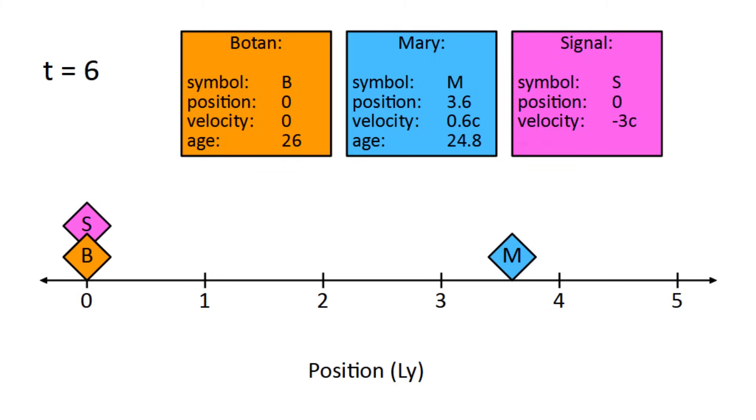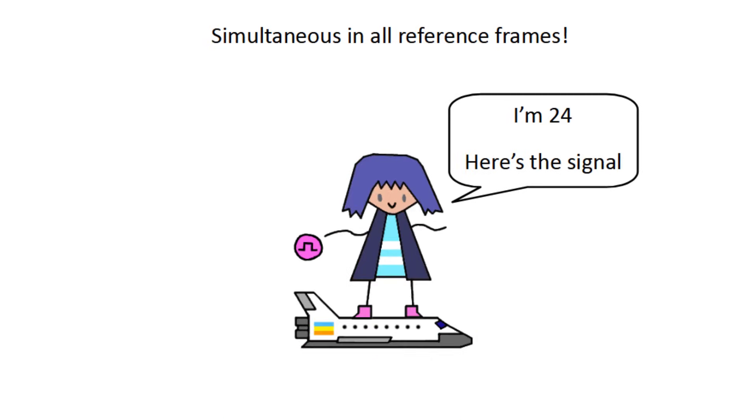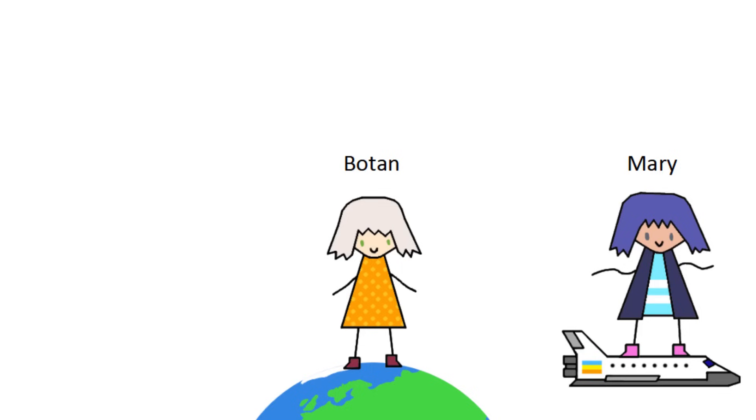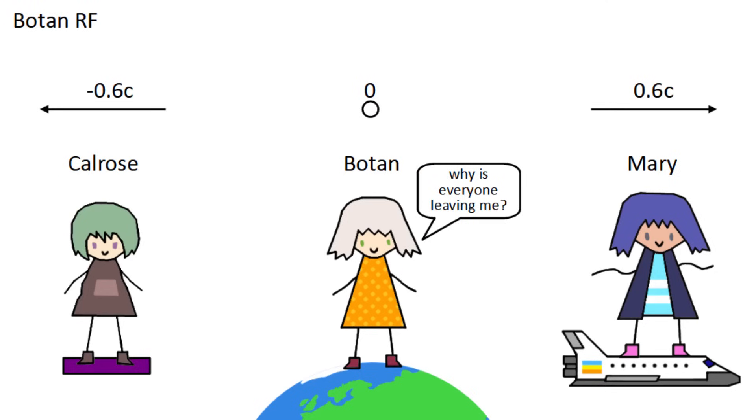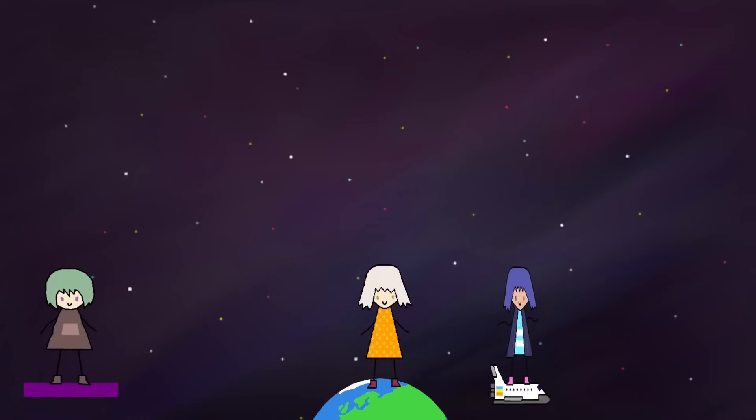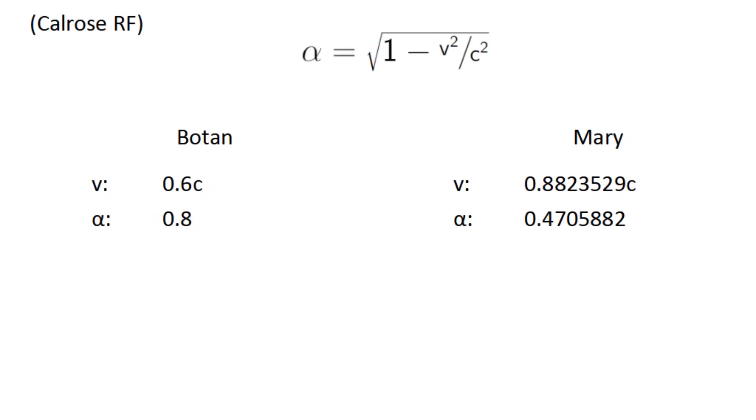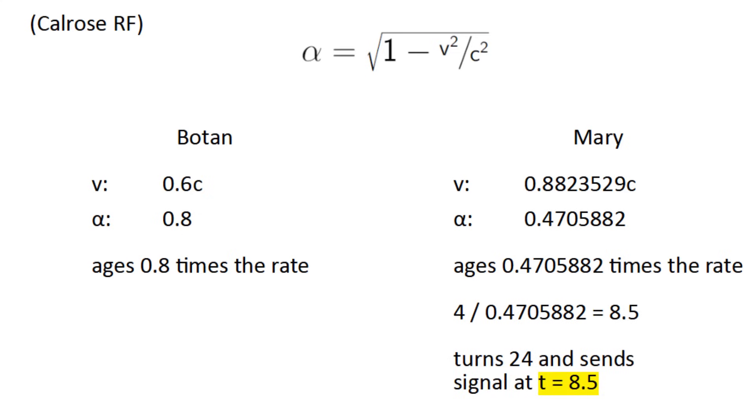Same for Mary turning 24 and sending the signal. So now we're going to introduce a third observer, Calrose, who moves to the left at 0.6c relative to Botan. This means in Calrose's reference frame, Botan now moves 0.6c, and as for Mary's velocity, we just use the formula and find it's 0.882c. Now we can calculate alpha for both of them, which represents how much slower time passes for them. With that, we calculate that Mary turns 24 and sends the signal at time equals 8.5. Meanwhile, Botan turns 26 and receives the signal at time equals 7.5.